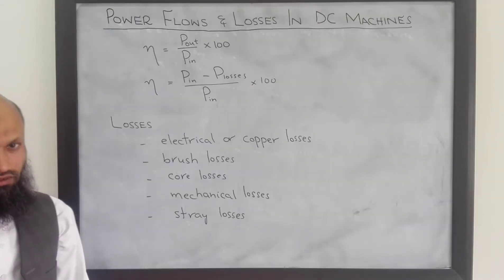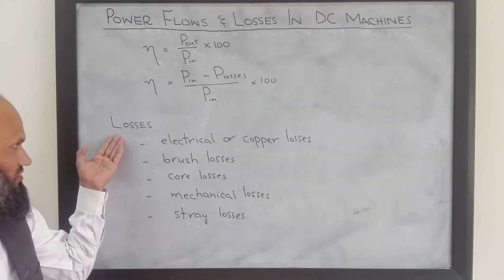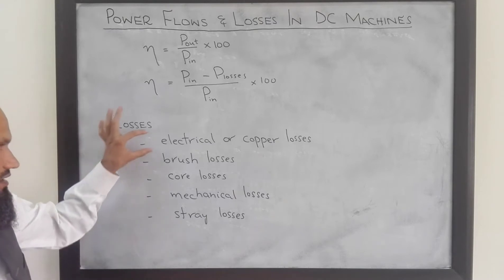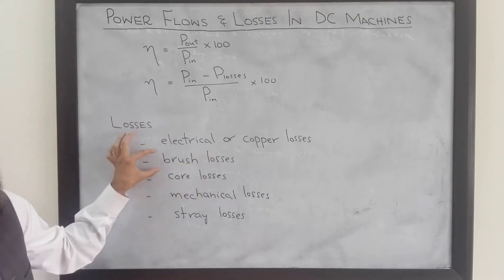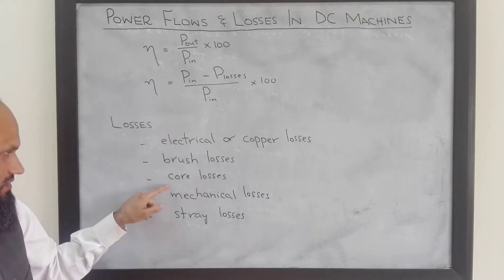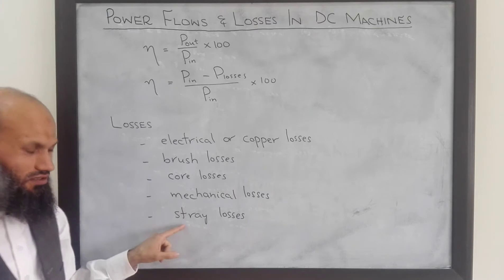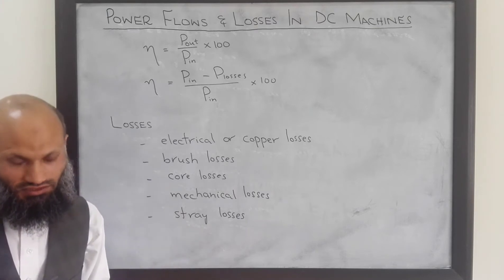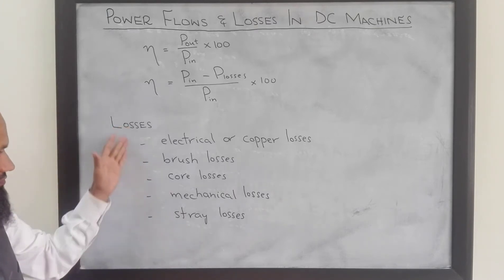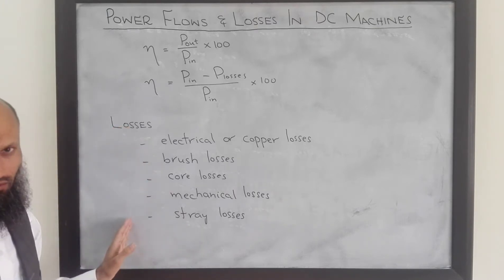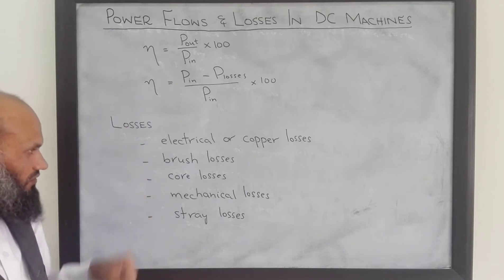There are multiple sources of losses in DC machines. These are the electrical or copper losses, brush losses, core losses, mechanical losses, and stray losses. We shall talk about all these losses briefly, one by one.